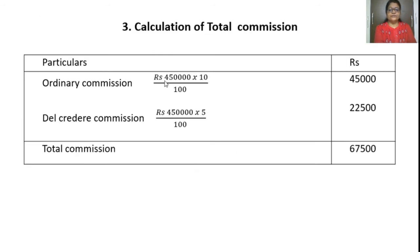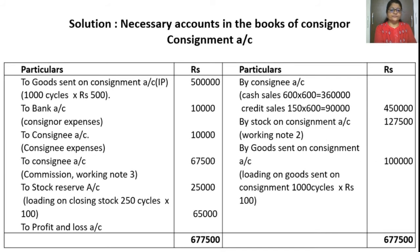Calculation of total commission: ordinary commission is 10% and del credere commission is 5% on gross sales. Total gross sales: 750 cycles at Rs. 600 = Rs. 4,50,000. The consignment account shows goods at invoice price of Rs. 5,00,000. Consignor expenses and consignee expenses are entered. Consignee commission already calculated: 15% on Rs. 4,50,000 = Rs. 67,500. Loading on goods sent is Rs. 1,00,000 (1,000 cycles at Rs. 100 loading each).